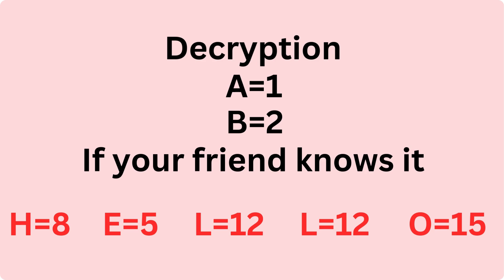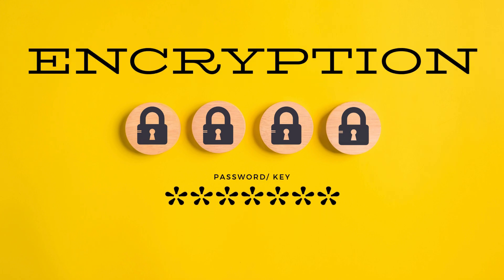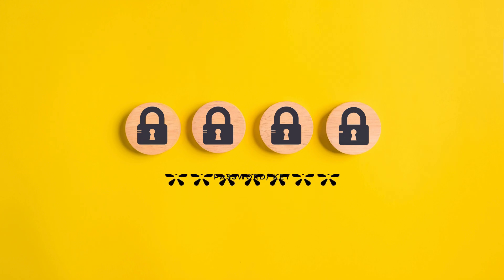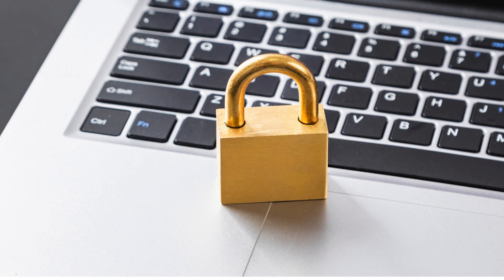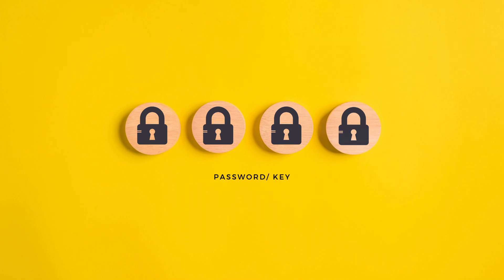Example 2 — a digital example using a key. Imagine sending a locked box with a message inside. Encryption: you put a letter inside a box and lock it with a key before sending it. Decryption: the receiver uses the same key to unlock the box and read the message.